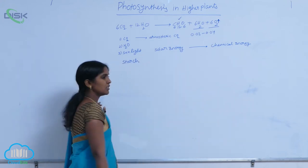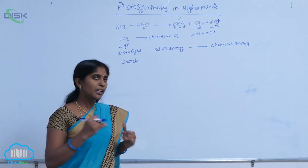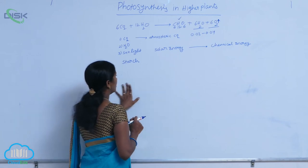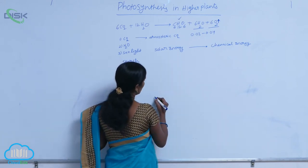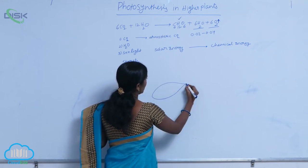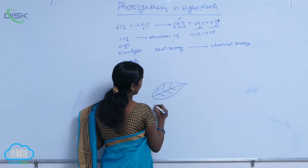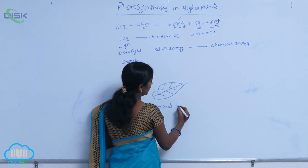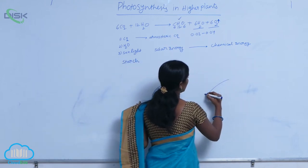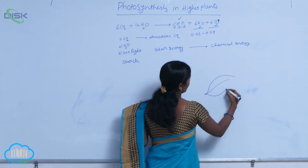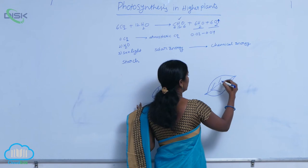Starch. During photosynthesis, the starch is produced. To verify this, we conduct an experiment. For this experiment, two leaves are taken. One is a normal leaf, and another is also a healthy and normal leaf, but it is covered with black tape. That is the black-tape-covered leaf.